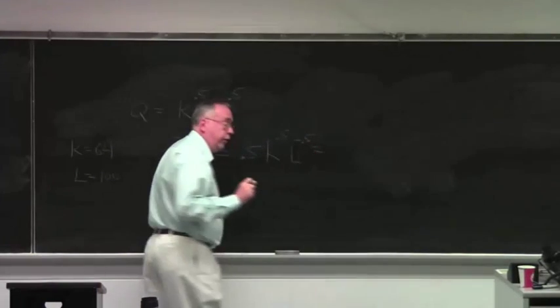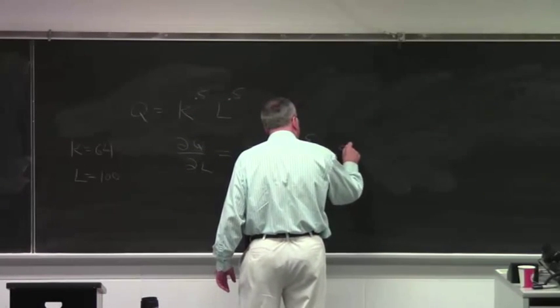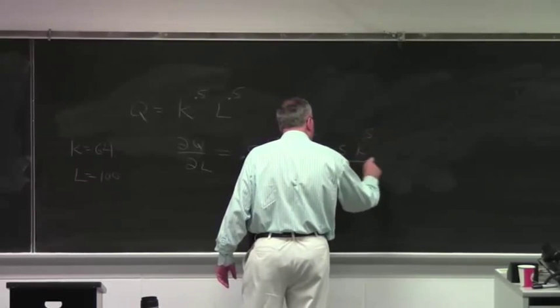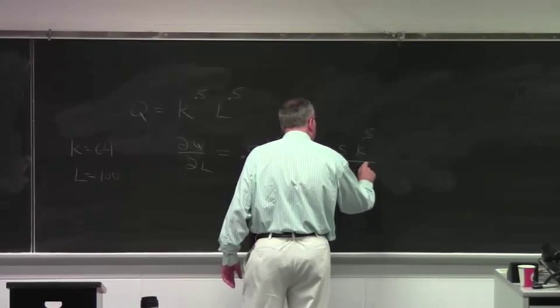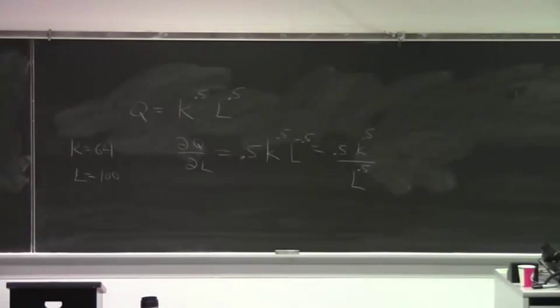And which we could write, you're absolutely right, Ben. We could write this as 0.5 times K to the 0.5 divided by L to the 0.5. Because L to the minus 0.5 power is just 1 over L to the 0.5.